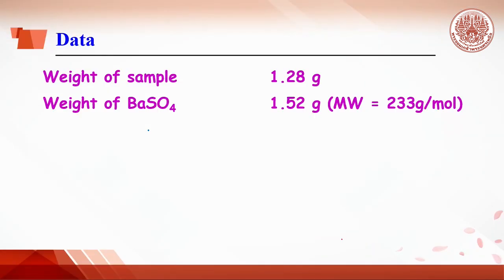Calculation. From the experiment, each group of students obtains the weight of sample, for example 1.28 g, and the weight of barium sulfate after the precipitation, filtration and drying, 1.52 g.